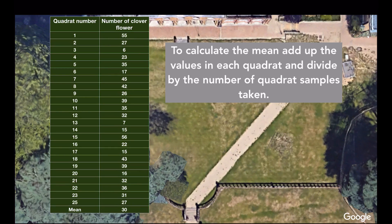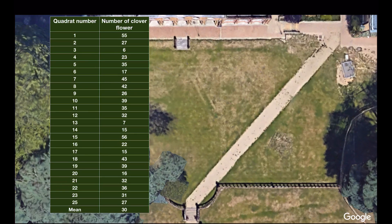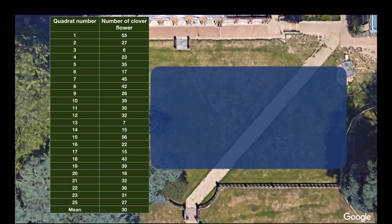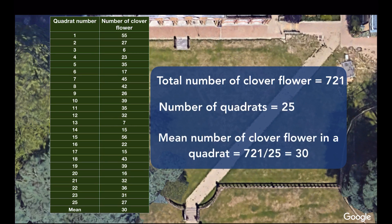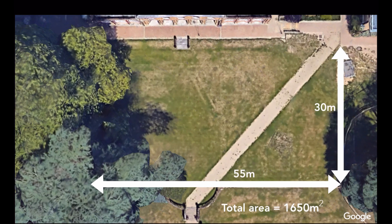What you then want to do is work out the mean for the quadrats. The way you do that is to add up all the values — adding up all the number of clover flowers gives me 721 — and then divide by the number of quadrats taken, which is 25. So 721 divided by 25 gives me 30. That's the mean number of clover flowers in a quadrat.